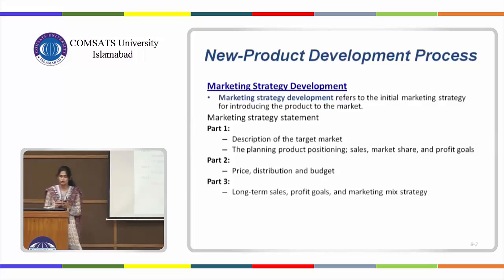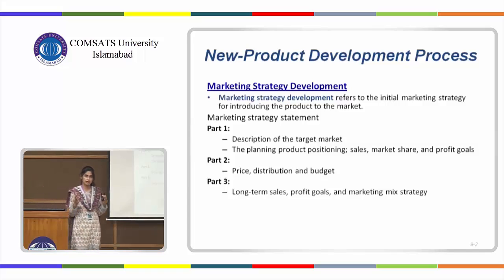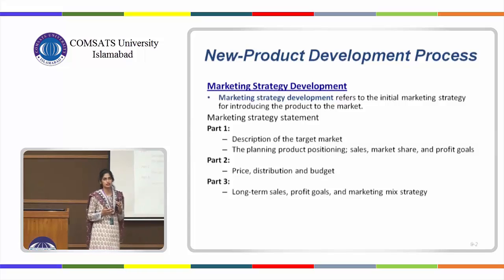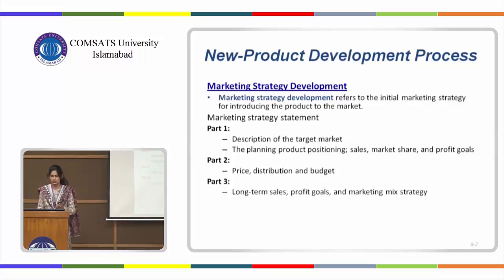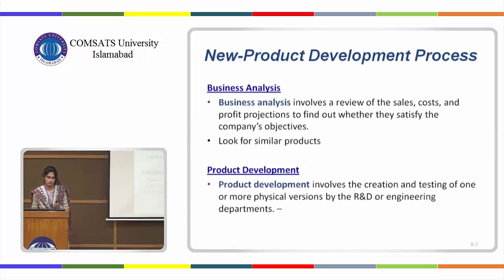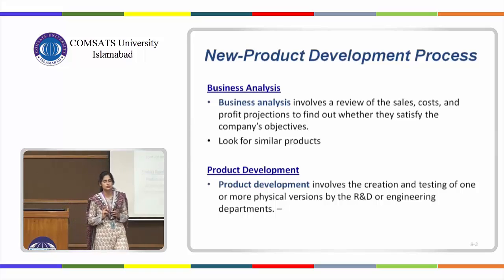The first part of marketing strategy development is description of the target market — you try to define who the people are that you're trying to sell the product to. Then your profit goes along with your market share. Once you've defined that, you would want to price the product, distribute the product, and do all the marketing budgeting.